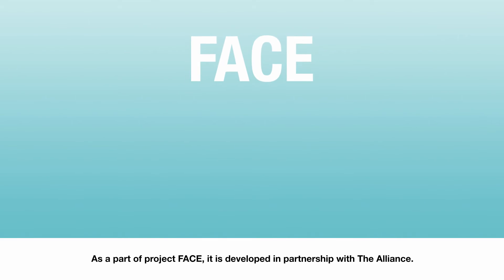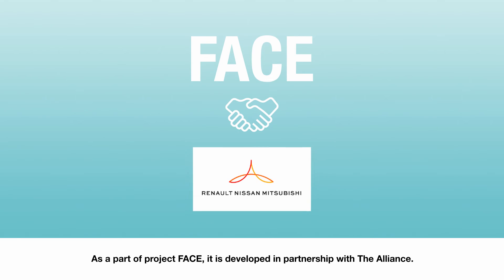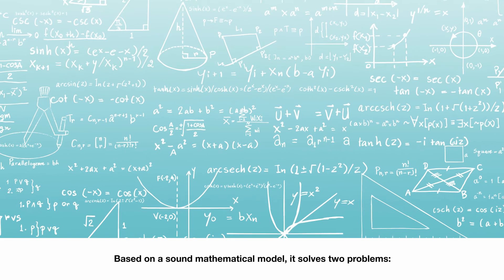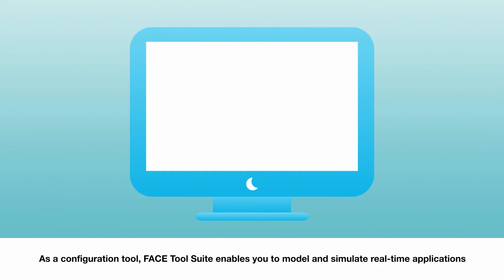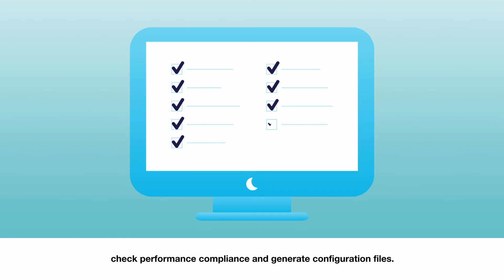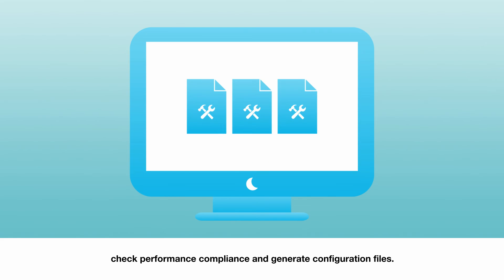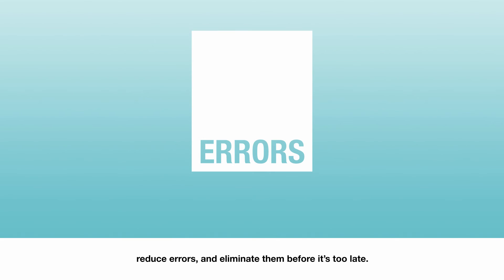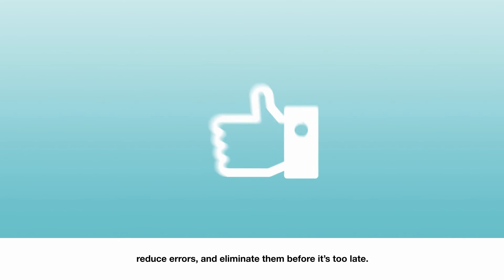As part of Project Phase, it is developed in partnership with the Alliance. Based on a sound mathematical model, it solves two problems. As a configuration tool, Phase Tool Suite enables you to model and simulate real-time applications before the prototyping phase, detect upstream failures, check performance compliance, and generate configuration files. These features allow you to save money, accelerate your design, reduce errors, and eliminate them before it's too late.